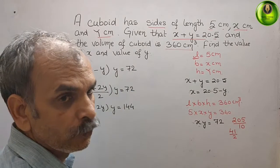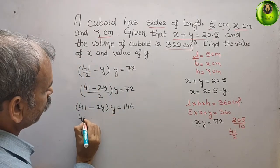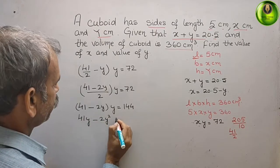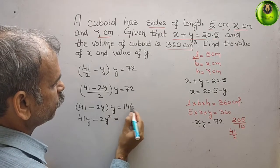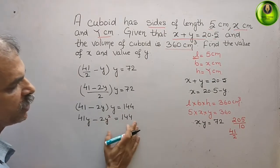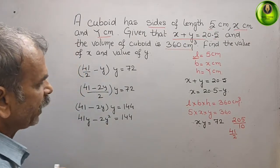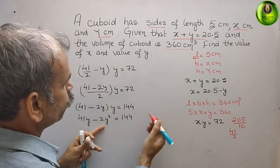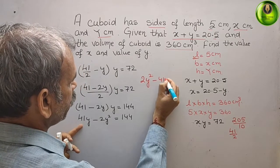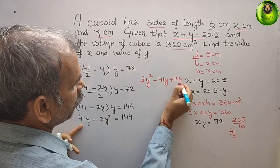Expanding: 41y minus 2y squared equals 144. Bringing all terms to one side gives us 2y squared minus 41y plus 144 equals 0.